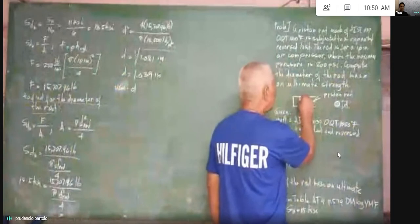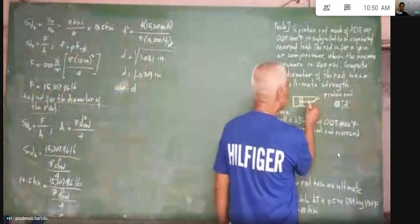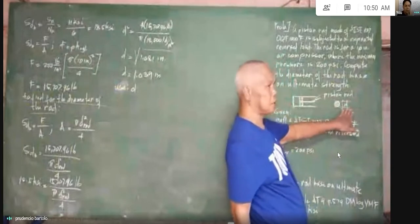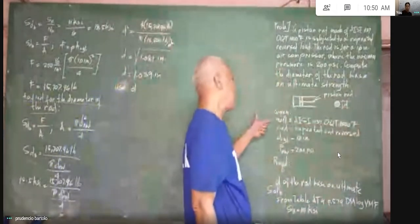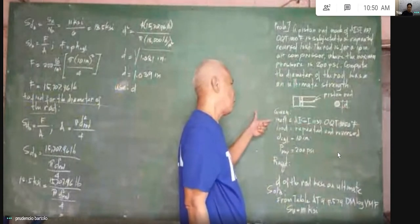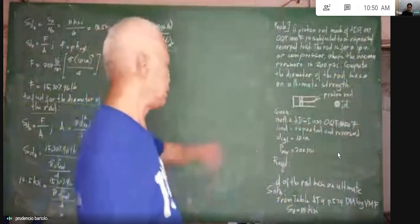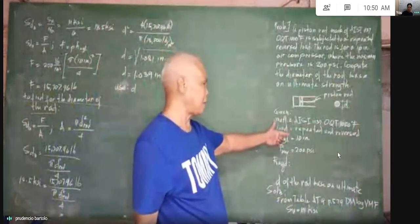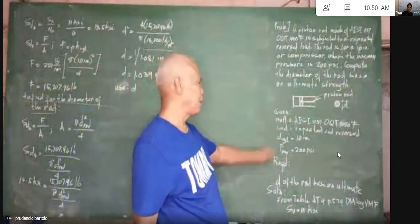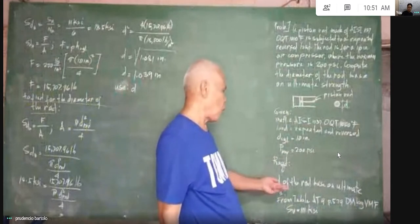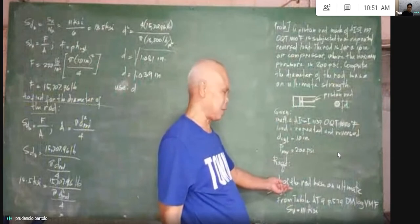We have here a cylinder with a piston and a piston rod with a circular cross-section having a diameter D, which is the one we are going to find. The material is AISI 1137 OQT 1000 degrees Fahrenheit. The load is repeated and reversed. The diameter of the cylinder is 10 inches and the maximum pressure is 200 PSI. We are asked to find the diameter of the rod based on ultimate strength.